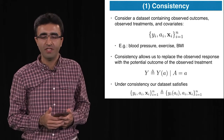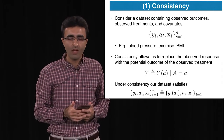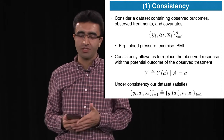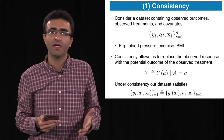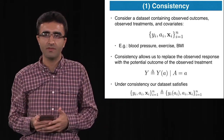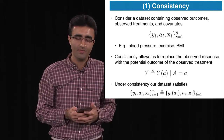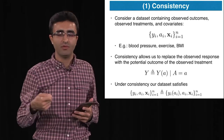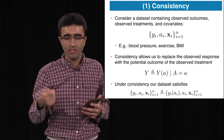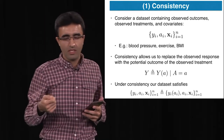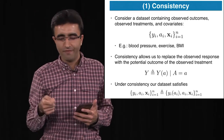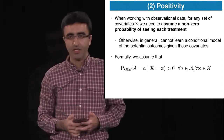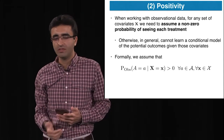The first assumption is consistency: if we observe blood pressure for some person who was assigned based on some strategy to do exercise, the blood pressure would be the same if we ask that person to exercise. More formally, the potential outcome Y(A) would equal the observed Y conditioned on the treatment. The second assumption is positivity: for any set of covariates, there must be a non-zero probability of seeing each treatment. If this assumption is not true, we can't generalize and can't learn the conditional model for those treatments.